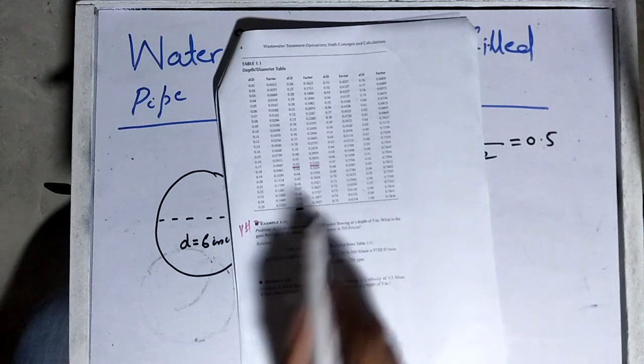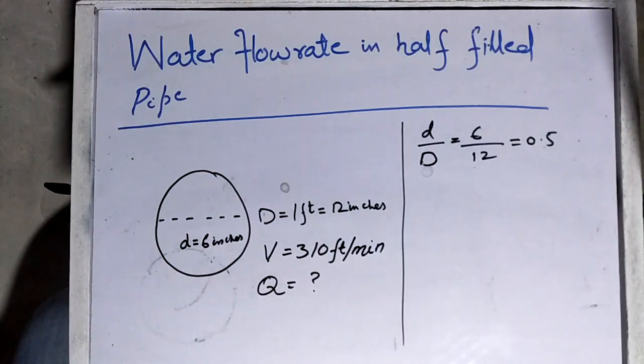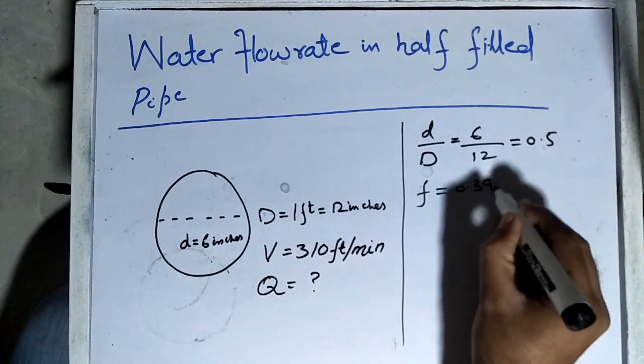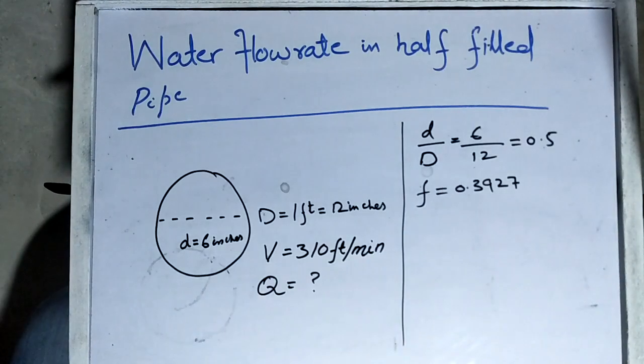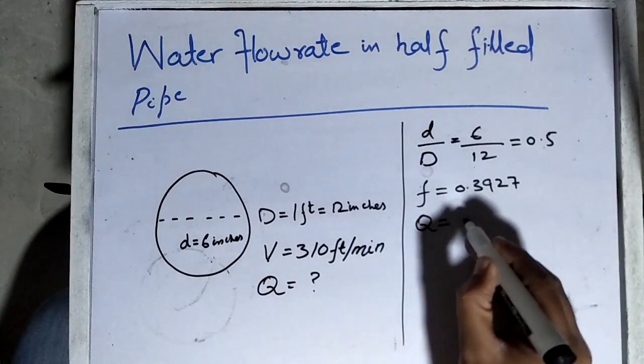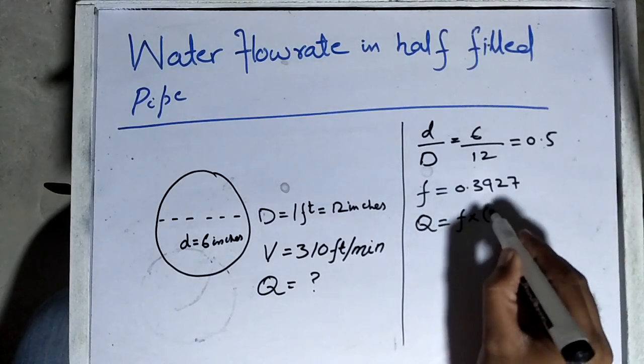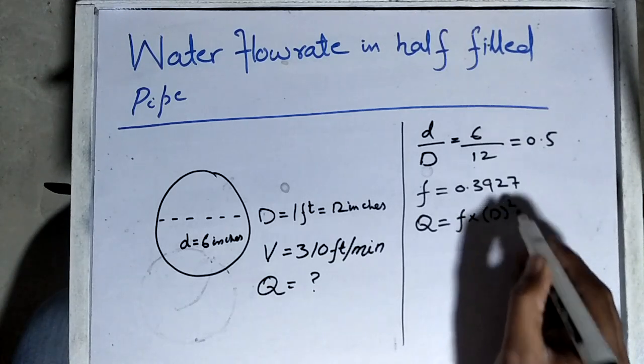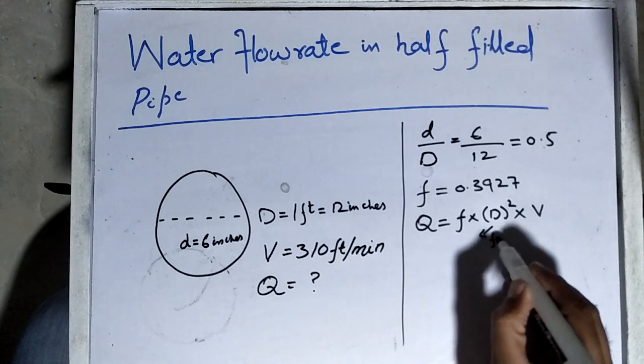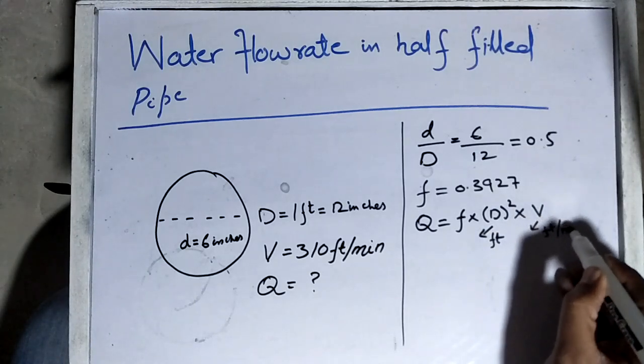Now we need to calculate flow rate. The formula is very simple: flow rate Q equals factor multiplied by diameter squared multiplied by velocity. The diameter should be in feet and velocity should be in feet per minute.